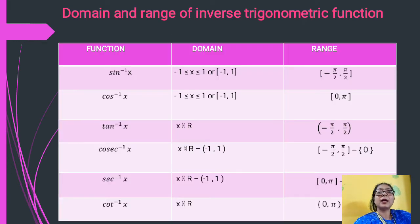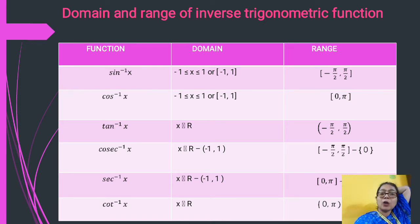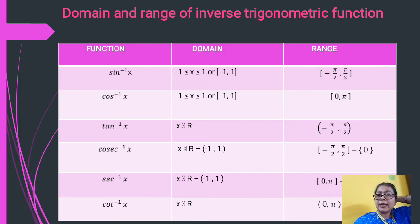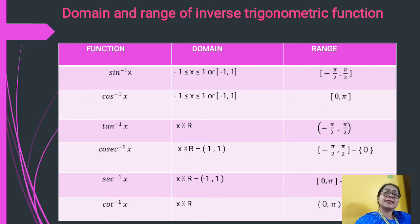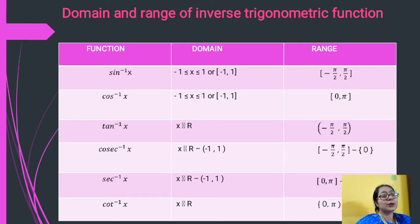Now let us see the different domain and range of inverse trigonometric functions. All the values given are for restricted domain and range. Sin⁻¹(x) has domain [−1, 1] and range [−π/2, +π/2]. Cos⁻¹(x) has the same restricted domain [−1, +1] and range [0, π].